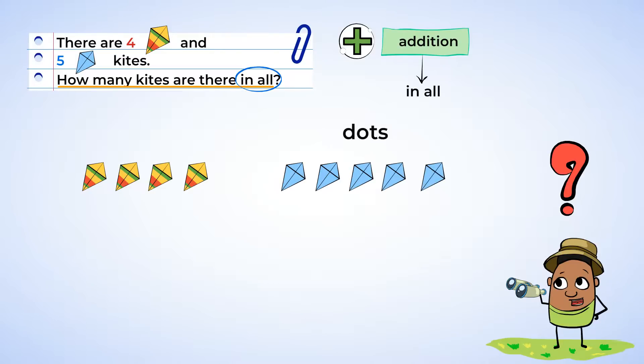Now it might be a lot to put dots on all of them, so you can just write dots above the kites. Now I see two groups of kites, and we're gonna put them together into one big group. Oh yeah, that is definitely addition. Great.